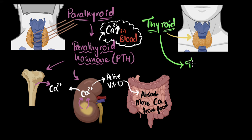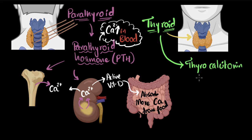This hormone is called thyrocalcitonin. And I want to just double-check if that's what it is — yep, that's the name, I got it right. I can't believe I usually don't get the biology names right. Anyway, thyrocalcitonin — you know what it does? It does the exact opposite of what PTH does. Its job is to decrease the calcium ions in blood.